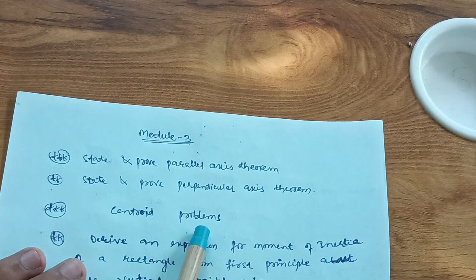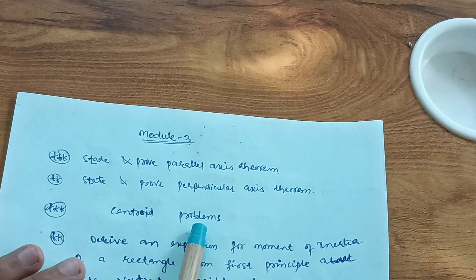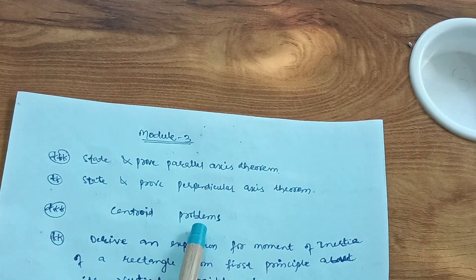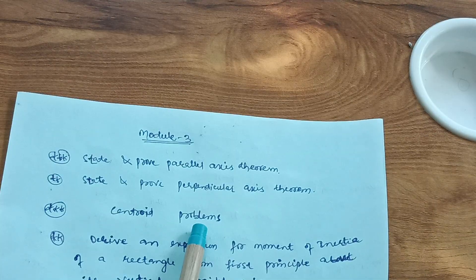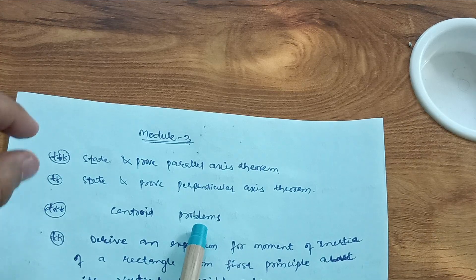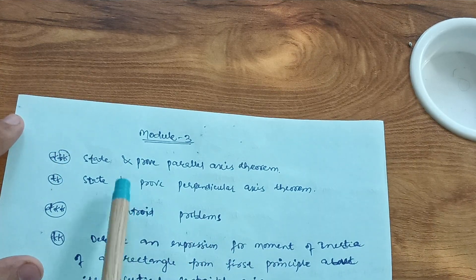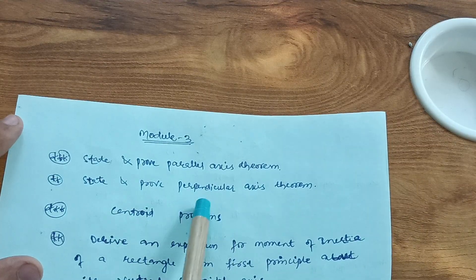And also centroid problems, my dear friends. This is the module where you have to cover some full problems on centroid. This is also a simpler concept, so you have to go through problems only. By theory it is very rare students are scoring six marks from these two questions, as these are always asking in VTU. State and prove parallel axis theorem, but by this much content you cannot